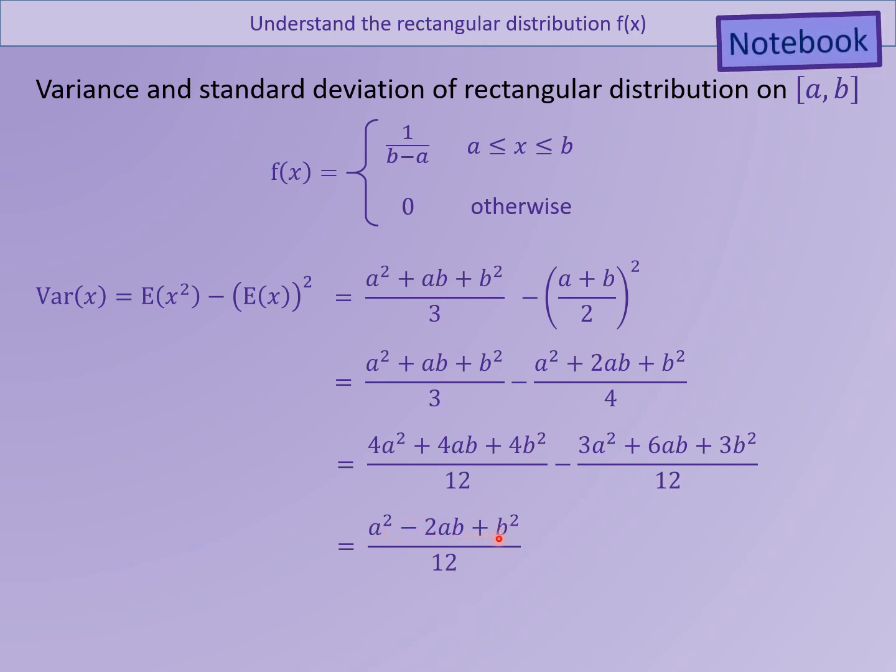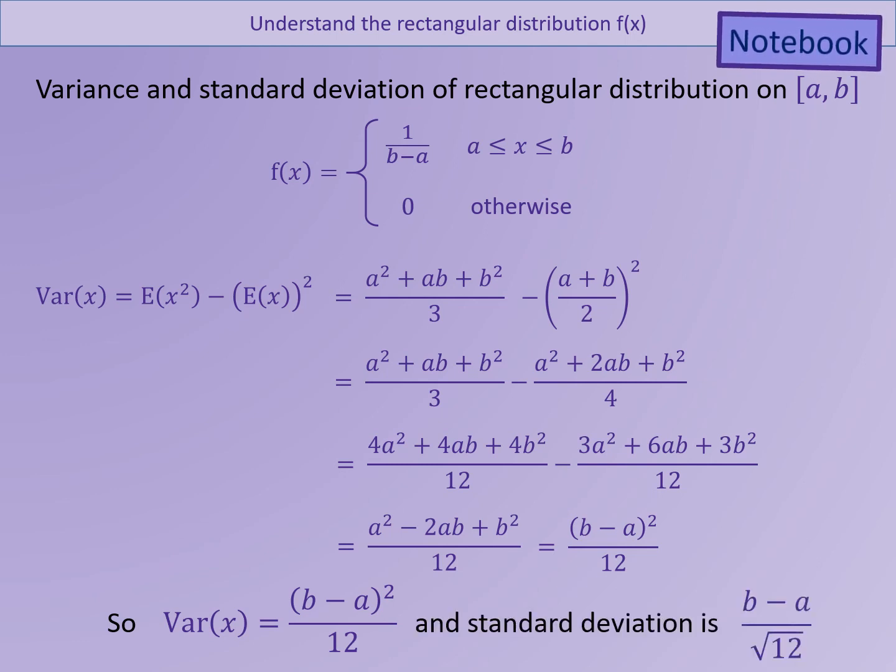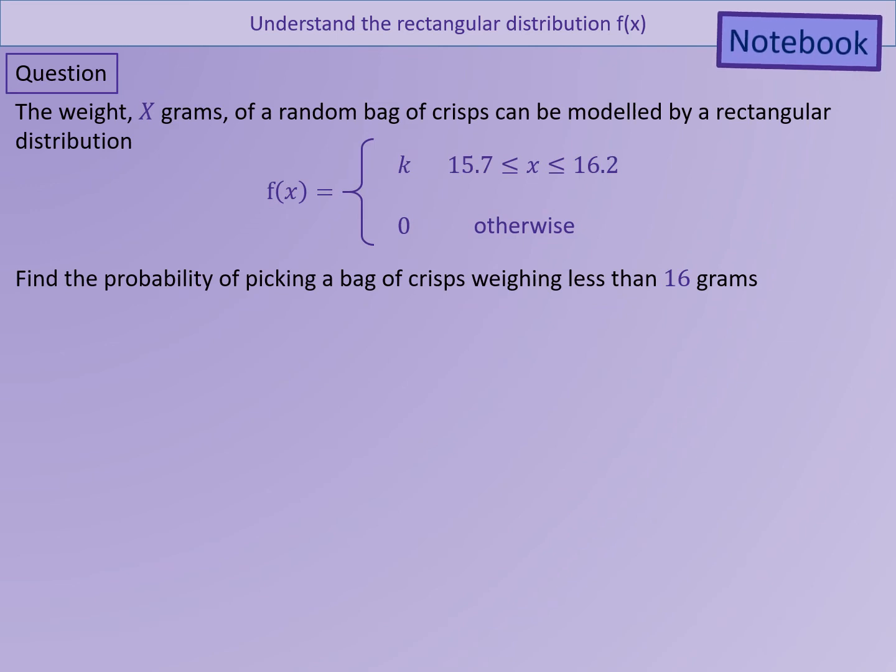Notice the top bit, a² minus 2ab plus b², can be written as b minus a all squared. So b minus a all squared. Or a minus b all squared, whichever way around it is. But why have I picked it that way around? You might be thinking, surely you do a and b. It's because that's what comes from the original. So that will be the one that's in your formula book. So in this case, Var(x) equals b minus a squared over 12. And the standard deviation of that, which is the square root, is going to be b minus a over root 12.